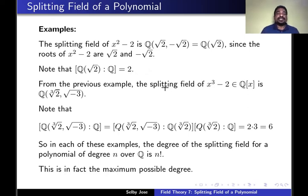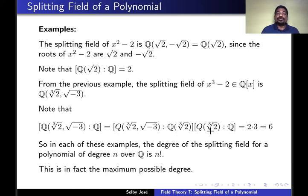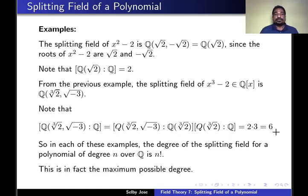In the previous example, we saw that the splitting field of x³ - 2 is Q(∛2, √(-3)). Note that the degree of the extension Q(∛2, √(-3)) over Q is the product of [Q(∛2, √(-3)) : Q(∛2)] and [Q(∛2) : Q], which is 2 × 3 = 6 = 3!. So for a polynomial of degree 3, the degree of its splitting field over Q is 6 = 3!.